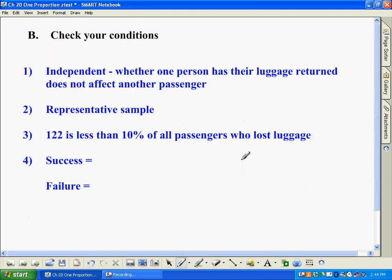Now let's go to conditions, and the conditions should look very familiar. They're the same as what we've been using for confidence intervals. One is about independence, and obviously whether one person has their luggage returned does not affect another. It's a representative sample, and 122 is definitely less than 10% of all passengers who lost luggage, especially on a national airline like this.